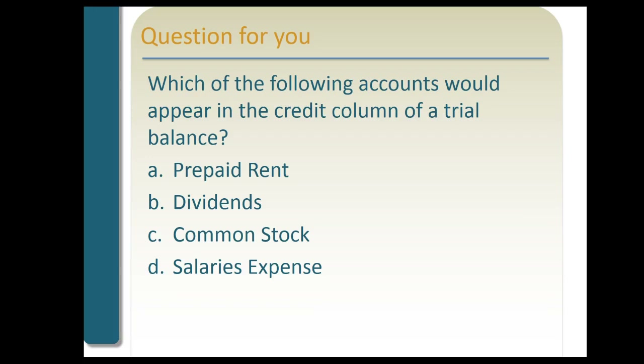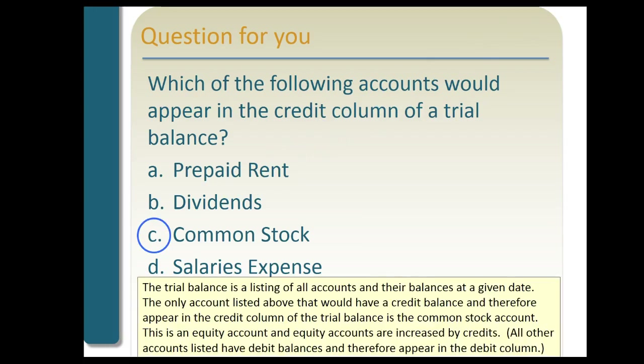Which of the following accounts would appear in the credit column of a trial balance? We know the normal balance of credit accounts would be liabilities and owner's equity. Prepaid rent is an asset — normal debit balance. Dividends have a normal debit balance. Salaries expense has a normal debit balance. So the only credit column account would be common stock, which is an equity account increased by credits.